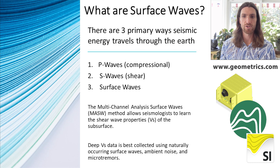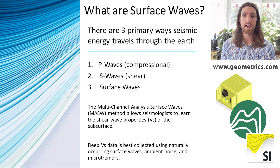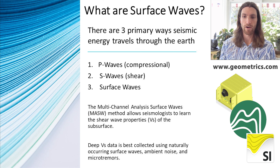After the surface wave data has been processed and a dispersion curve has been created, frequency can be transformed into depth for the final shear wave velocity model, which plots shear wave velocity versus depth. You can transform frequency into depth using the one-third wavelength theory — a numerical and experimental rule that phase velocity generally represents the S-wave velocity at a depth of roughly a half to a third of the wavelength. It's a rough approximation, like apparent resistivity.